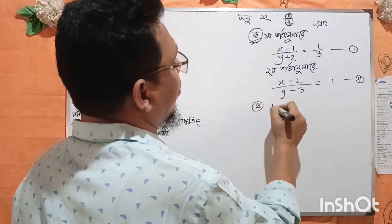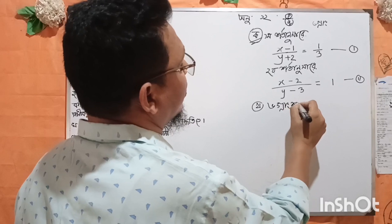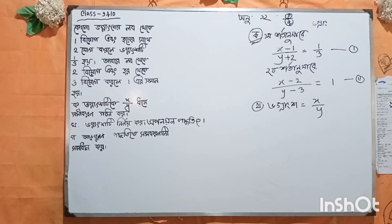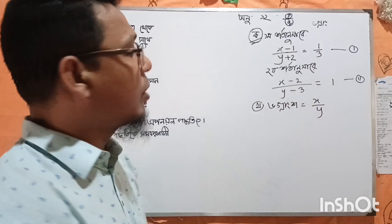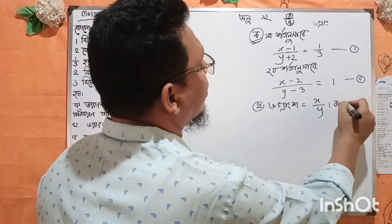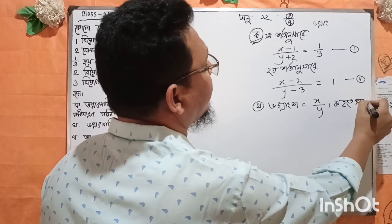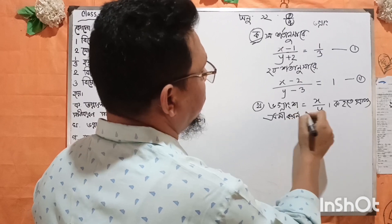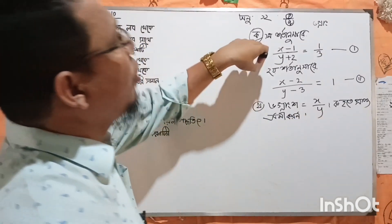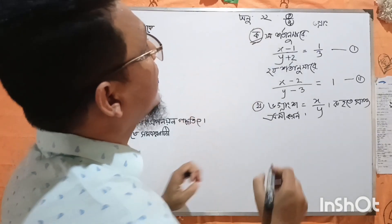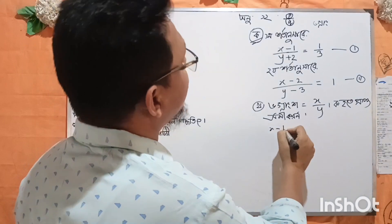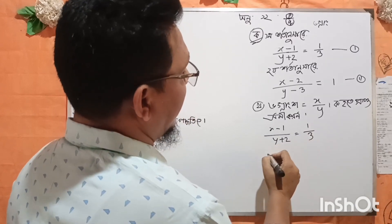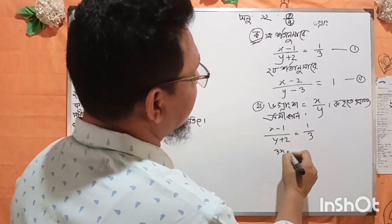The number we get is expressed as x by y. The number of x is related to the number of y. We know that the system gives x by y. Let's write the number as x by y. So this gives us 1 by 3, and x minus 3.